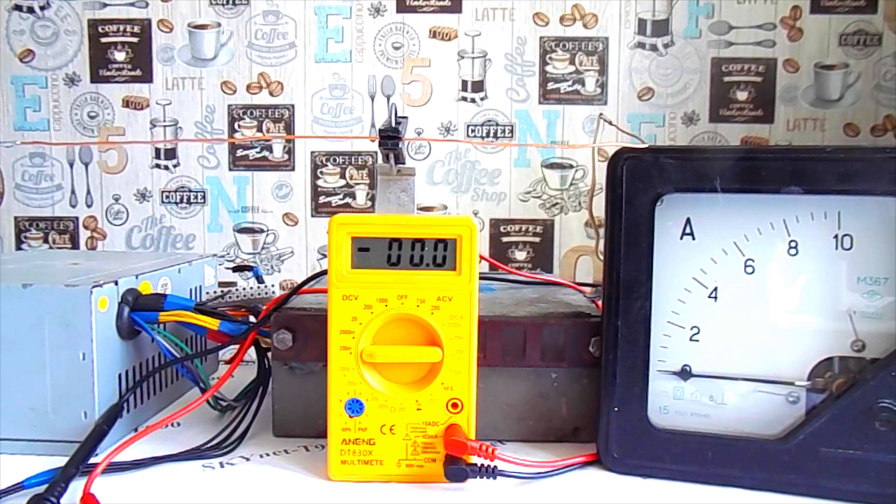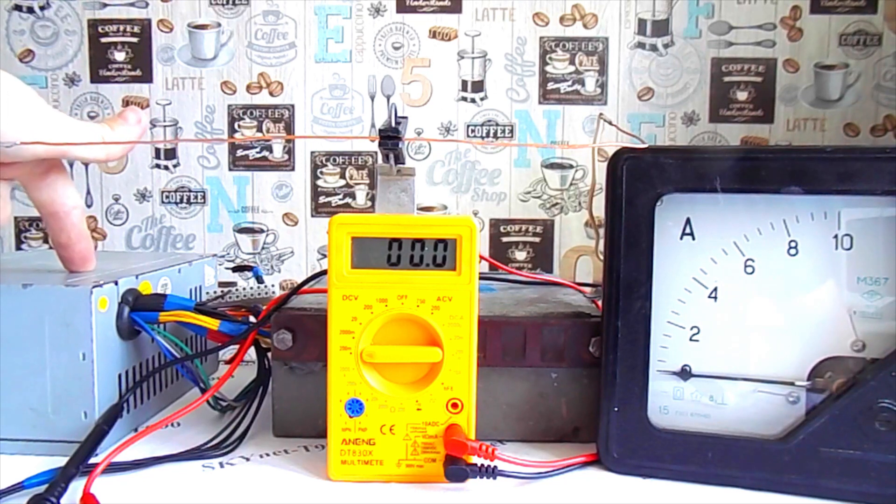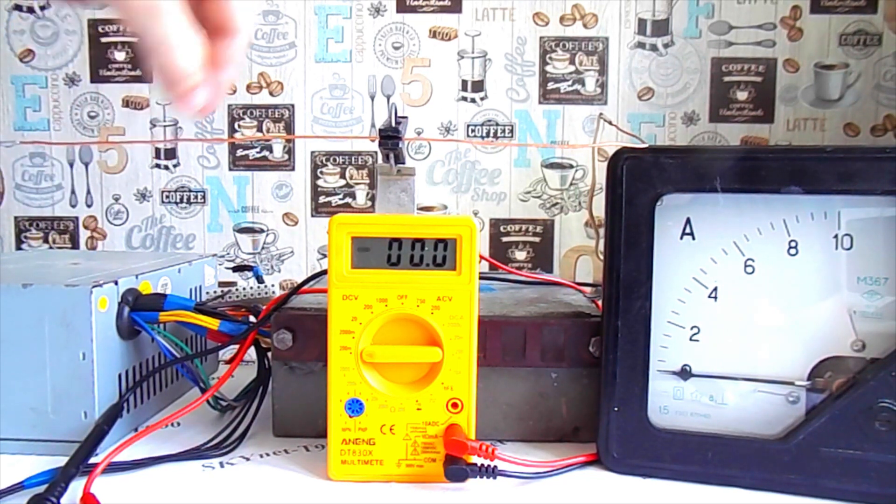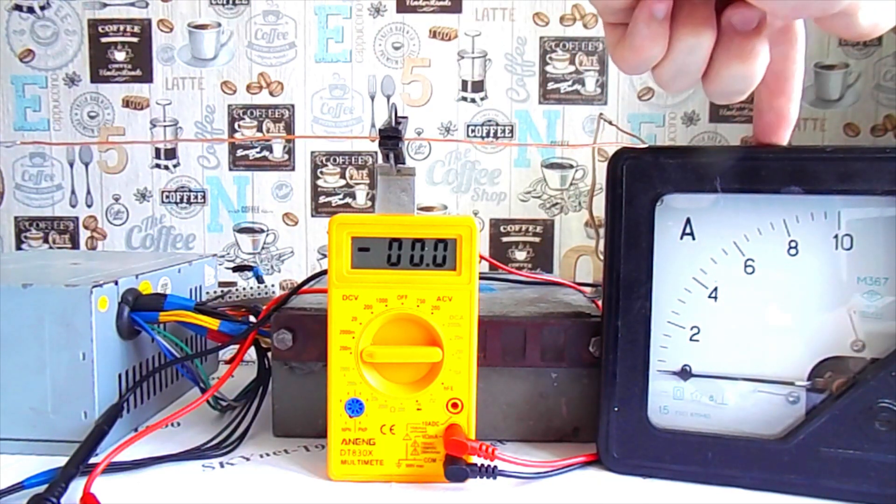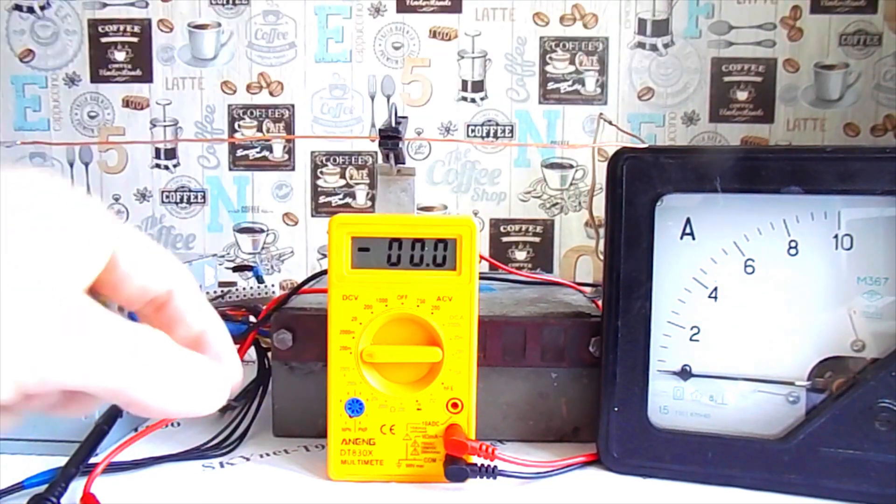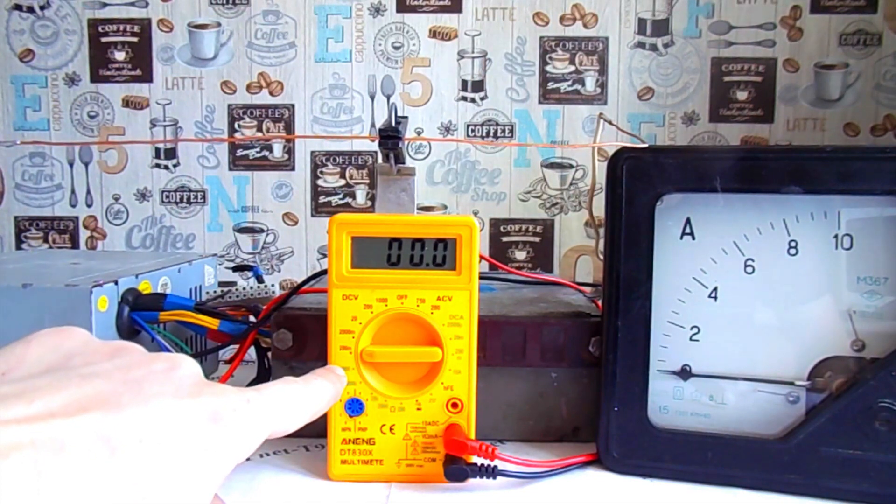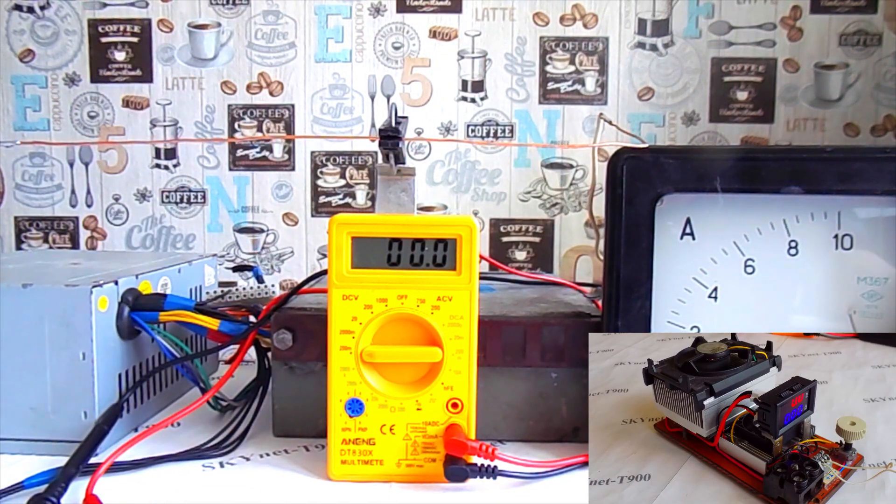On the table, I place the things that I showed in the diagram. Power unit from which I will supply current, a piece of copper wire with a diameter of 1.5 millimeters, ammeter for 10 current amperes, multimeter that will measure voltage up to 200 millivolts. I will load the circuit with an electronic load.